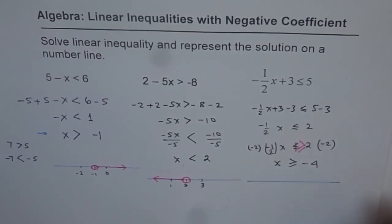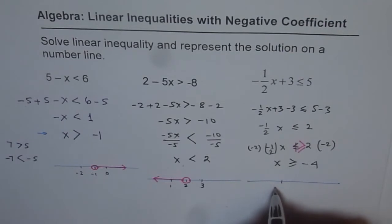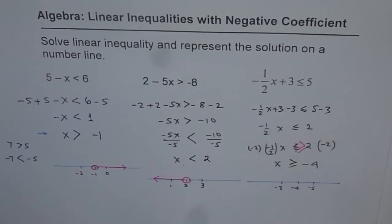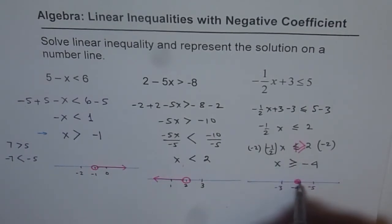Which could be represented on a number line as, you write minus 4, so we get minus 3, minus 4 and minus 5. Minus 4 is a critical number right in the center. It is filled up since it is greater than equal to. Greater than equal to means on the right. So that is the solution.